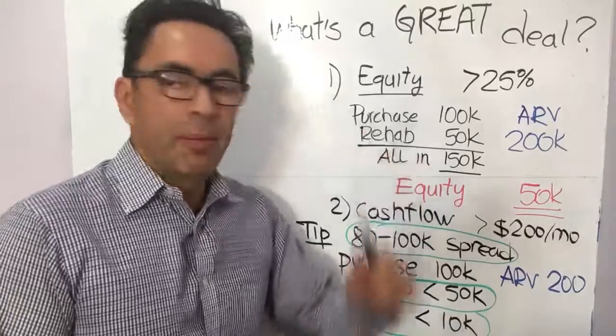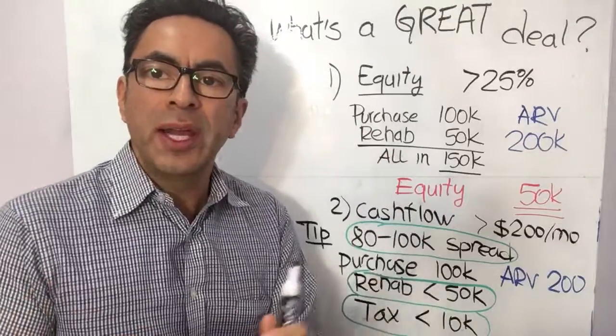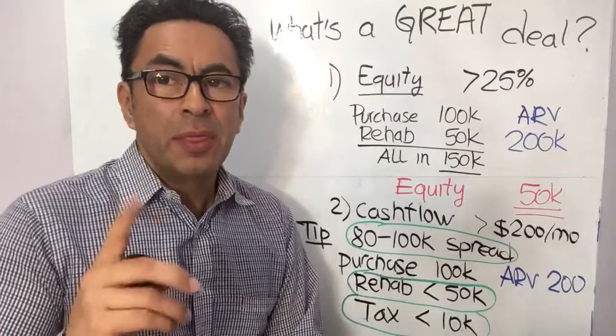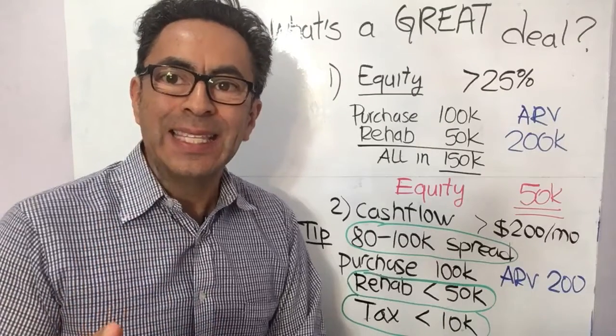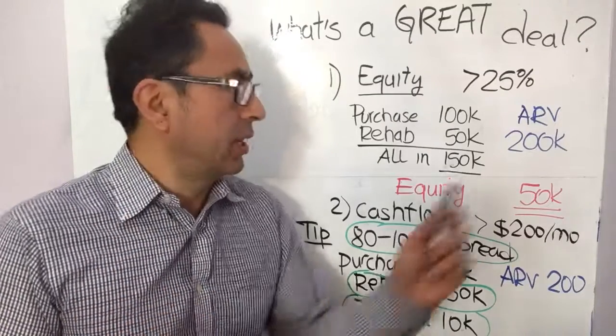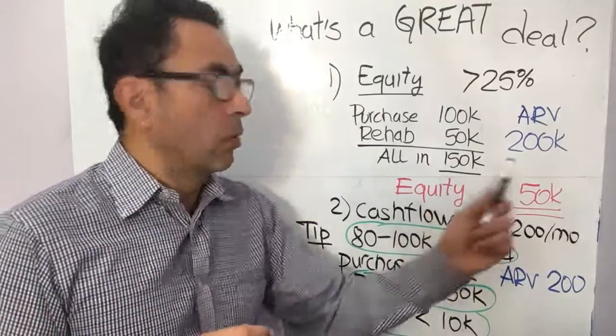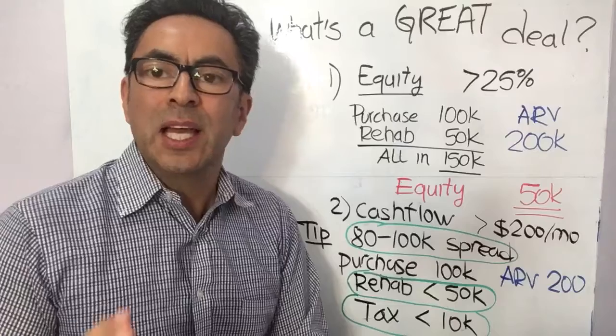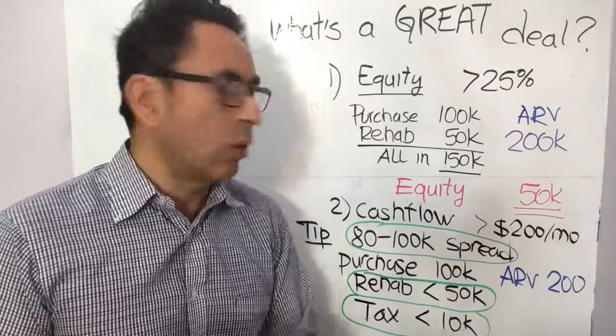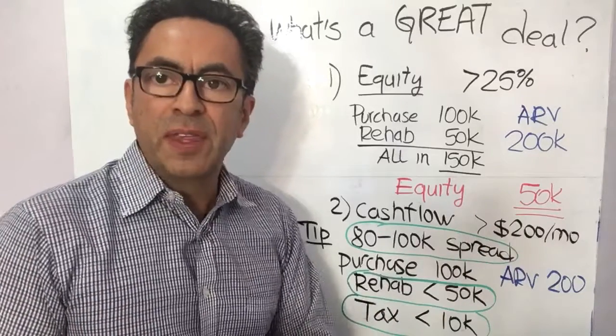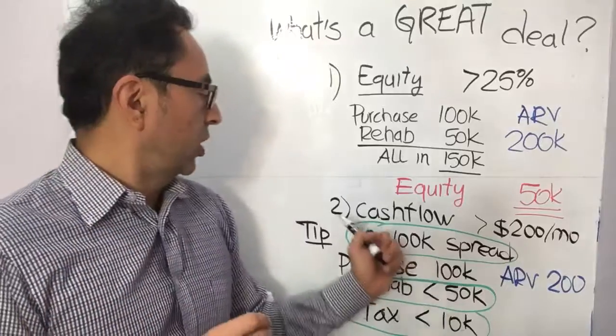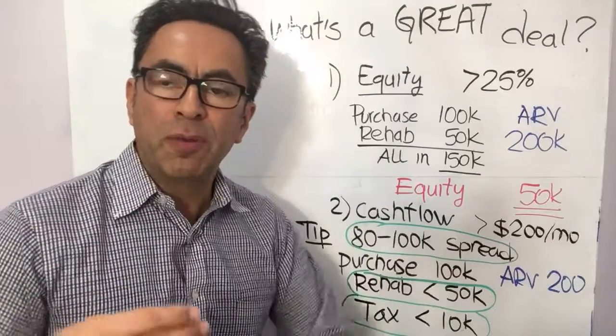You rehab it for fifty thousand, so all in, a hundred and fifty thousand. The property should appraise for at least two hundred thousand, meaning the ARV should be two hundred thousand. Therefore, you end up with at least 25 percent equity, or fifty thousand.